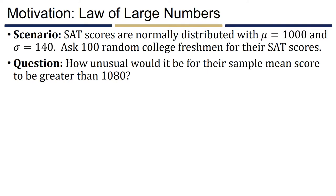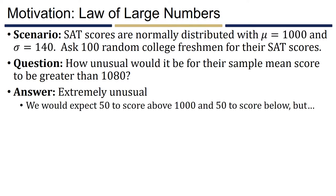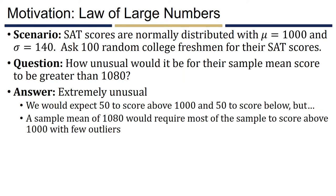Now consider asking 100 college freshmen. How unusual would it be for the sample mean of 100 students to be greater than 1,080? At this point it would be extremely unusual. We'd expect 50 students to score above 1,000 and 50 below, but a sample mean of 1,080 would require a large majority to score above 1,000. We couldn't afford anyone scoring in the 700 or 800 range. Most students would have to be scoring one to two standard deviations above the mean to keep that sample mean at least 1,080.